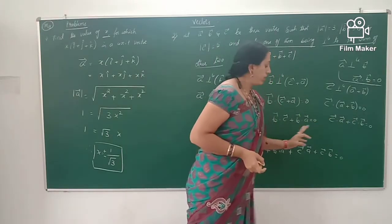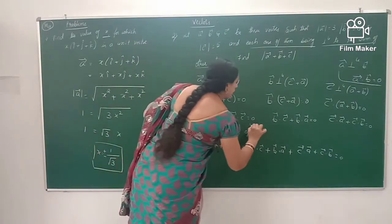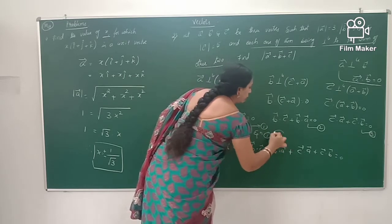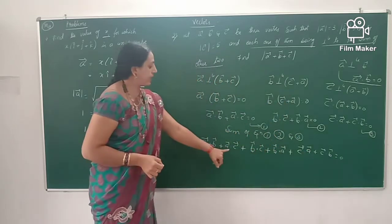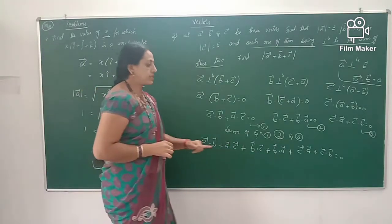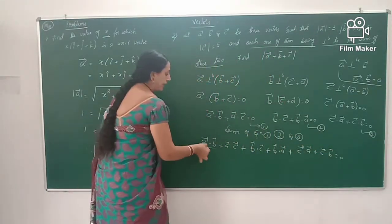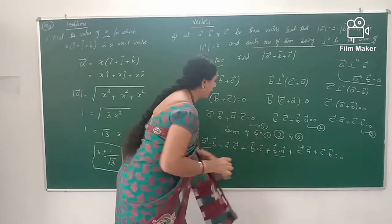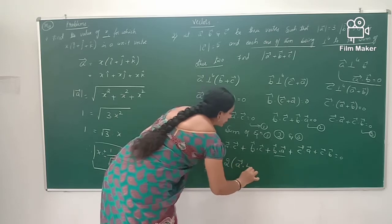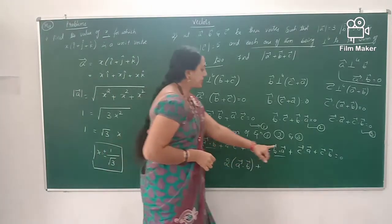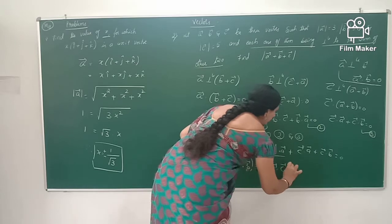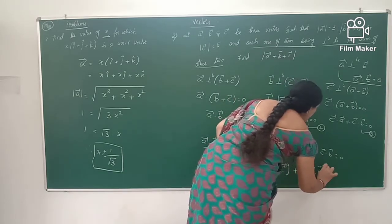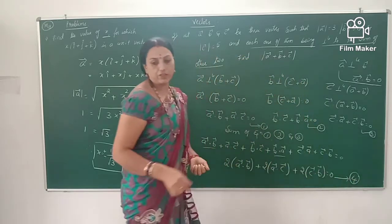The right-hand side of all three equations is zero, so the sum is also zero. Summing all three equations gives: a dot b plus a dot c plus b dot c plus b dot a plus c dot a plus c dot b equals 0. Since scalar multiplication is commutative, a dot b and b dot a are the same, giving 2(a dot b) plus 2(a dot c) plus 2(b dot c) equals 0. Let this be equation 4.